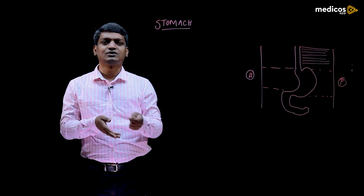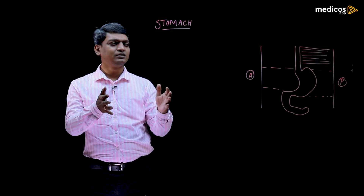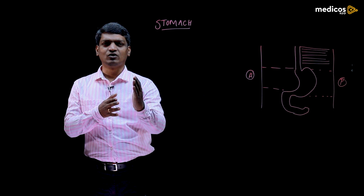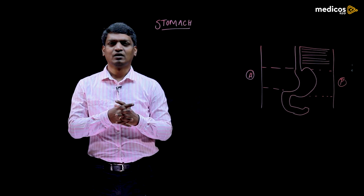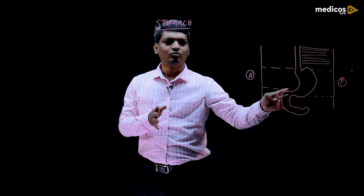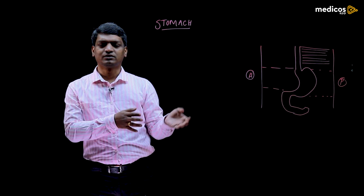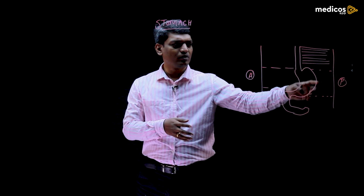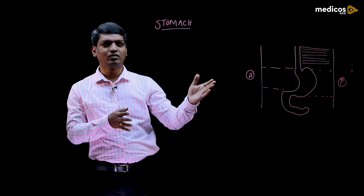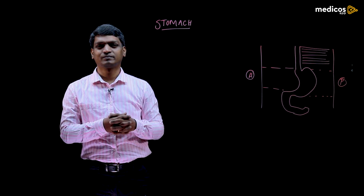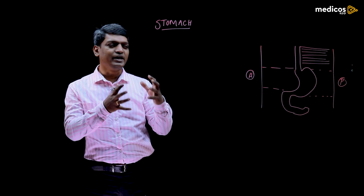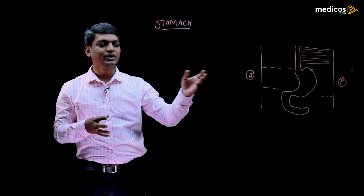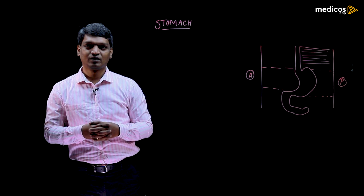The fusiform dilatation has got a ventral border, dorsal border, right surface, and left surface. The ventral border is less concave. The dorsal border of the stomach grows more rapidly than the ventral border, forming a more concave — or rather convex — structure. In a lateral view, the anterior border forms a lesser curve and the posterior border is more curved, forming the greater curvature of the stomach. So the posterior border forms the greater curvature and the anterior border forms the lesser curvature.